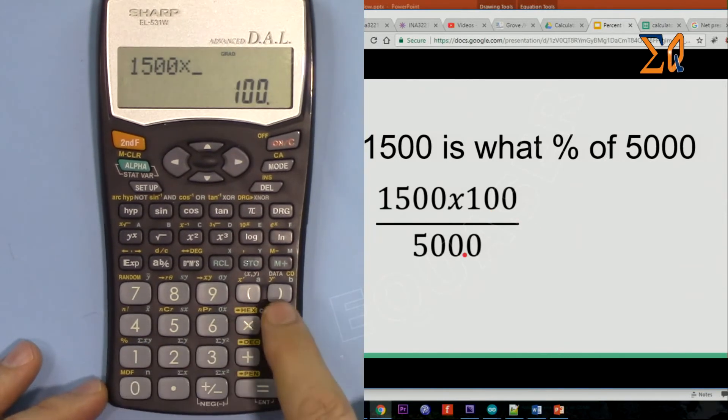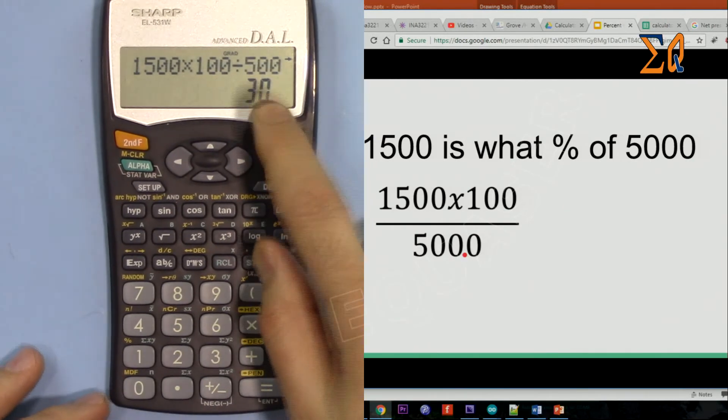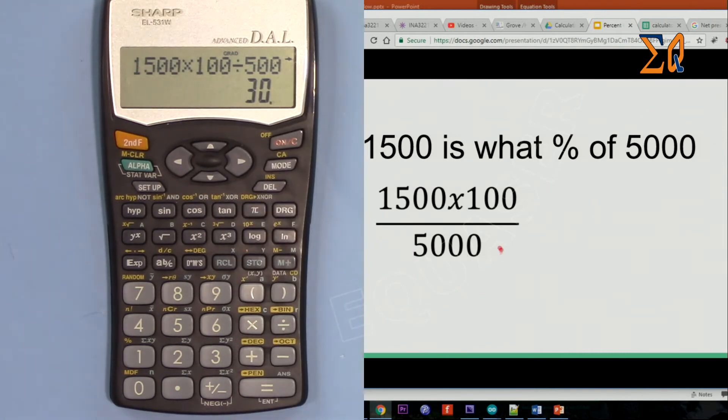Now the answer is 30, which we know, but this is how you find it. We multiply by 100 because the total value is always 100.